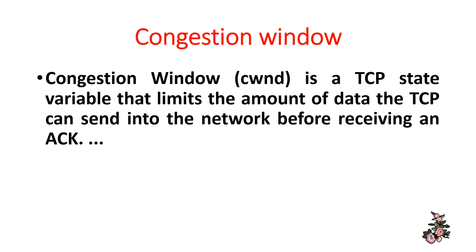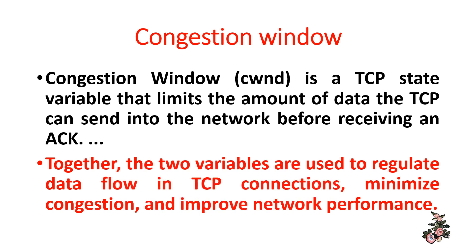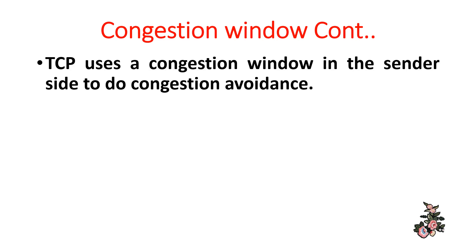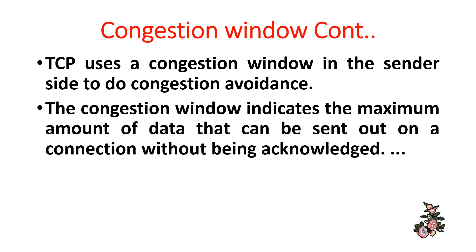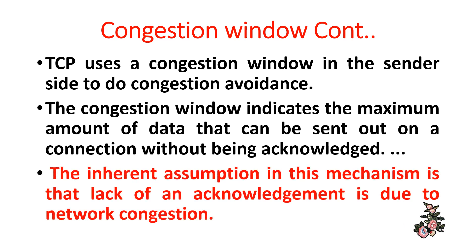The congestion window is a TCP state variable that limits the amount of data TCP can send into the network before receiving an acknowledgement. Together, the congestion window and related variables regulate data flow in TCP connections to minimize congestion and improve network performance. The congestion window indicates the maximum amount of data that can be sent out on a connection without being acknowledged. The inherent assumption is that lack of acknowledgement is due to network congestion.